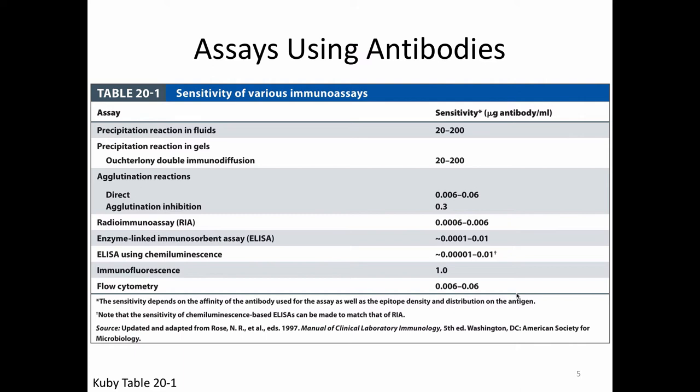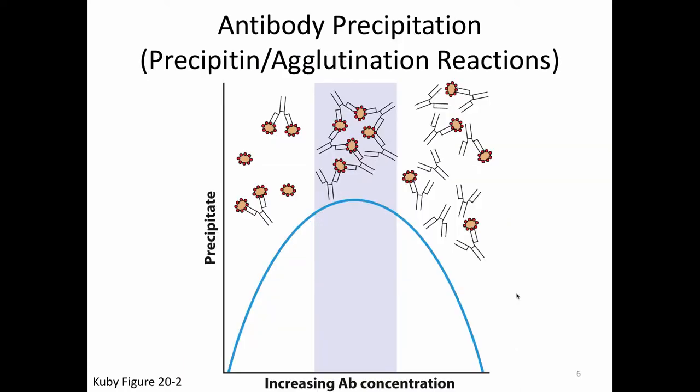One approach is to have free antibody and free antigen floating in fluid. When they bind, this is referred to as a precipitation or agglutination reaction. A precipitation reaction involves a free antigen; an agglutination reaction involves a cell-surface antigen, but the procedure is the same either way.